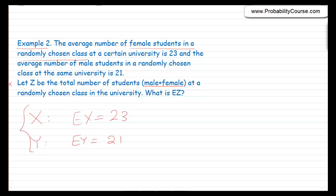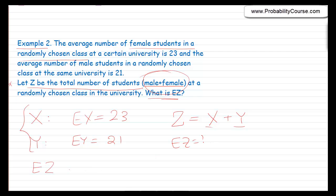Now I define a new random variable z as the total number of students — male plus female — at a randomly chosen class. So z equals x plus y. We guess that E[z] should be E[x] plus E[y], which is 23 plus 21, equaling 44.